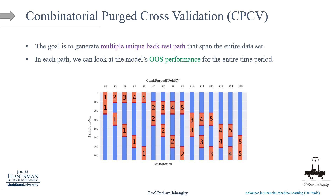The last technique is Combinatorial Purged Cross-Validation, or CPCV, developed by Marcos Lopez de Prado, discussed in his book 'Advances in Financial Machine Learning.' CPCV is especially useful for backtesting trading strategies because it generates multiple unique backtest paths that span the entire dataset, helping avoid overfitting and preventing overly optimistic performance metrics.